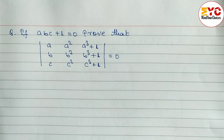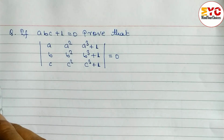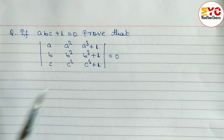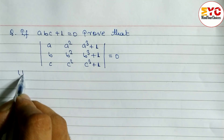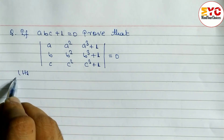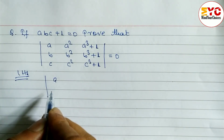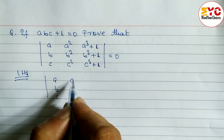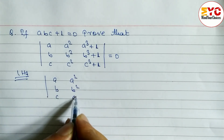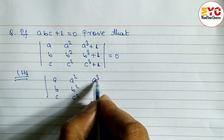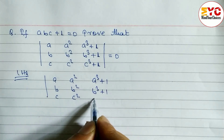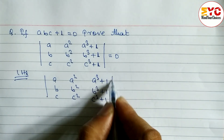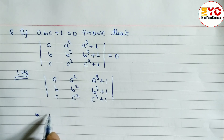Hello everyone. This question is taken from classical business math. By using properties of determinants, we have to prove that the determinant equals zero. Let's take a start. Take LHS: here we have a, b, c in the first row; a squared, b squared, c squared in the second row; and a cubed plus 1, b cubed plus 1, c cubed plus 1 in the third row.